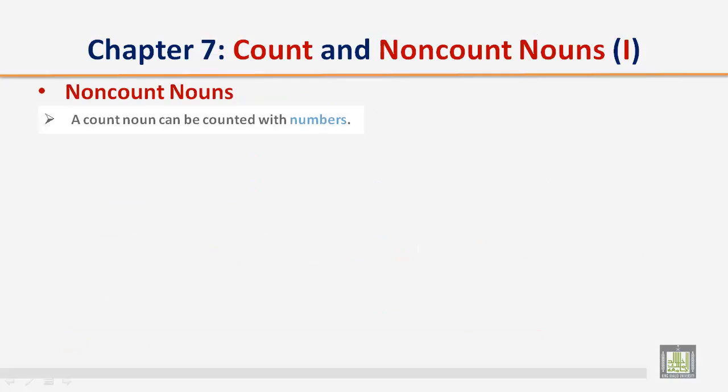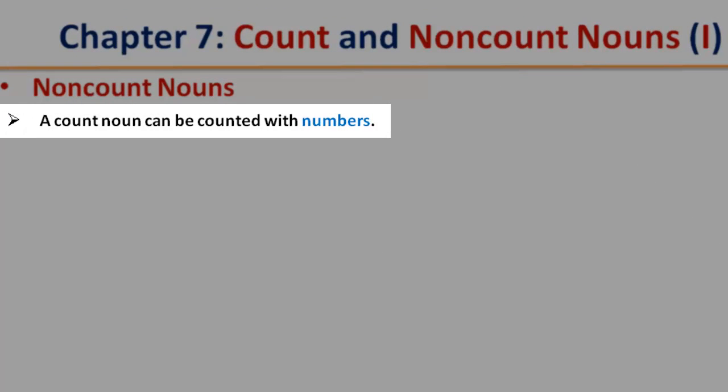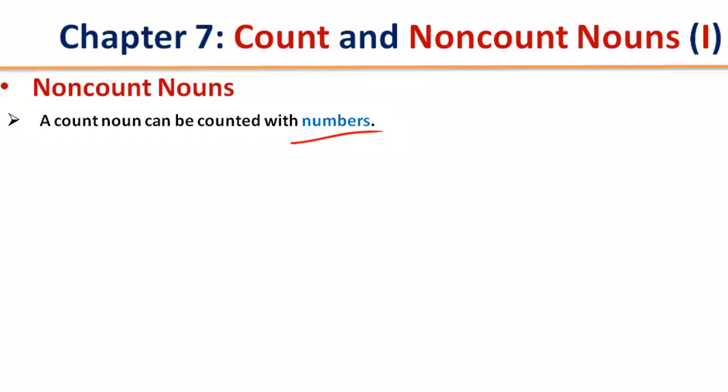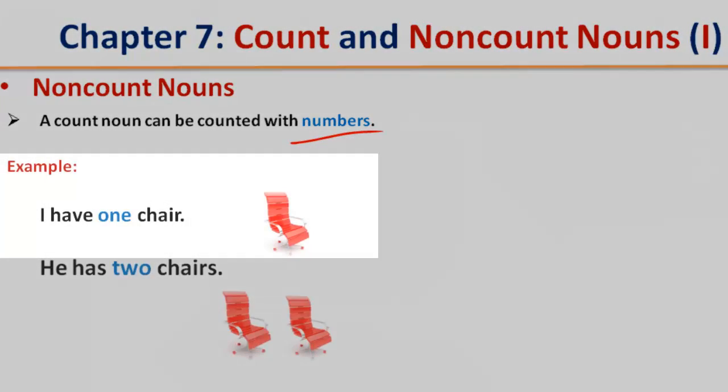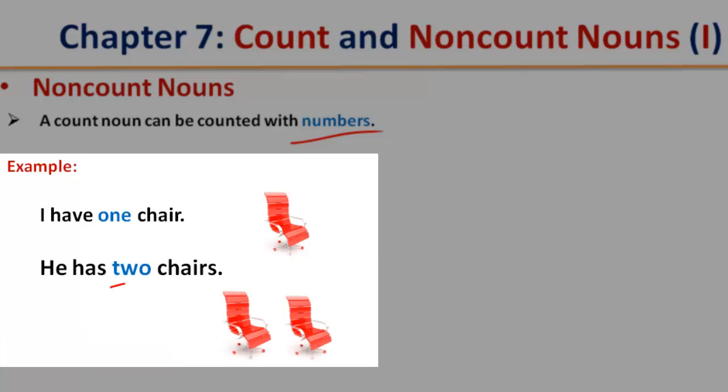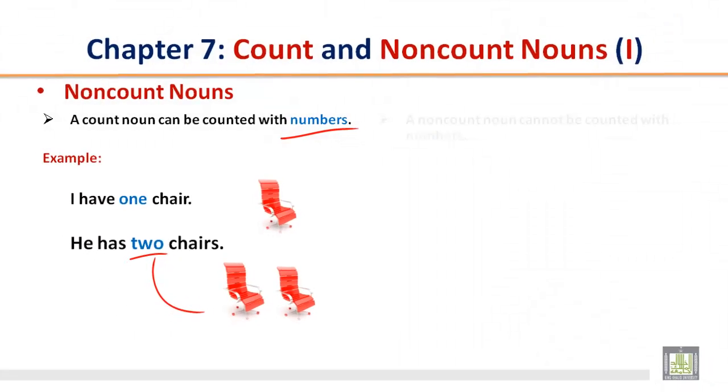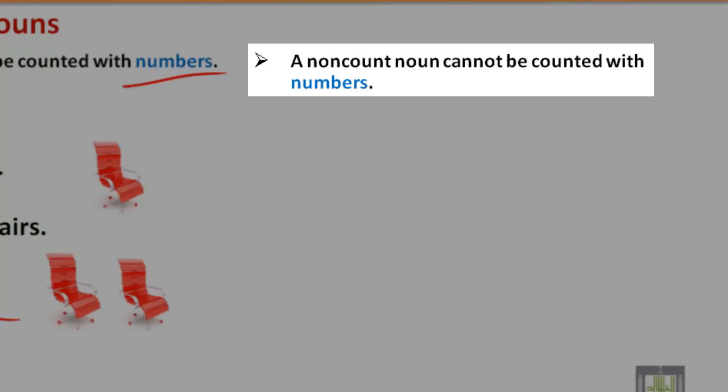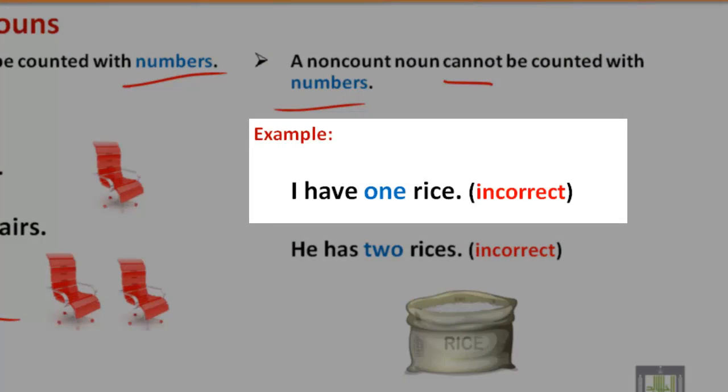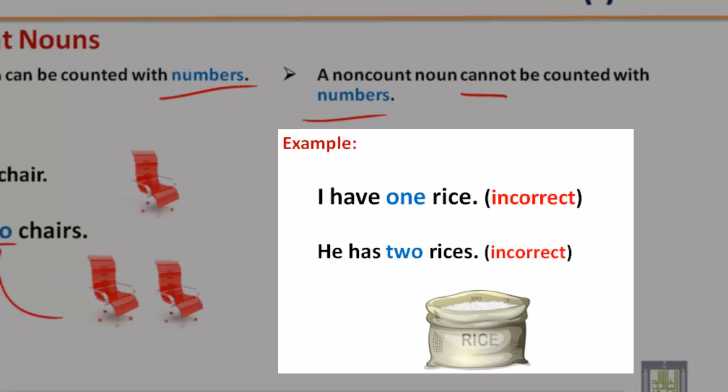Non-count nouns. A count noun can be counted with numbers. I have one chair. He has two chairs. A non-count noun cannot be counted with numbers. I have one rice. He has two rices. Incorrect.